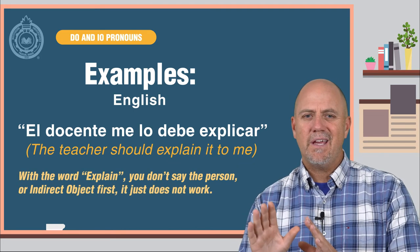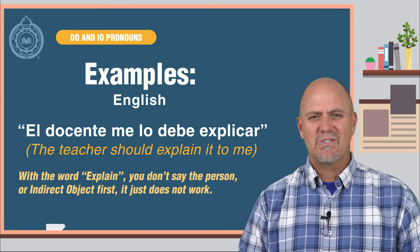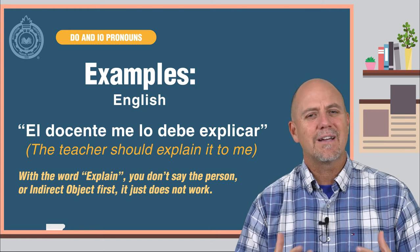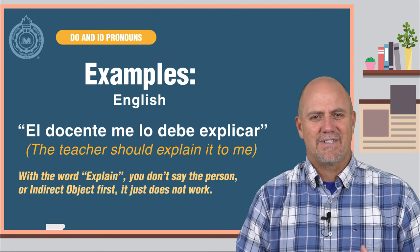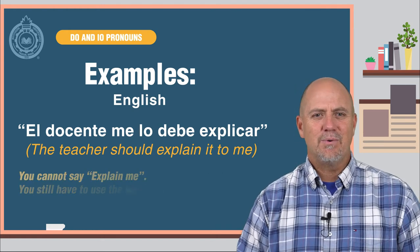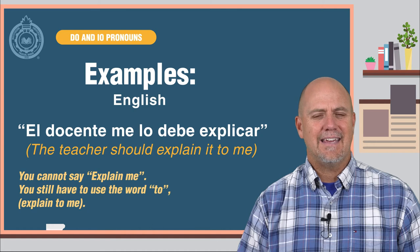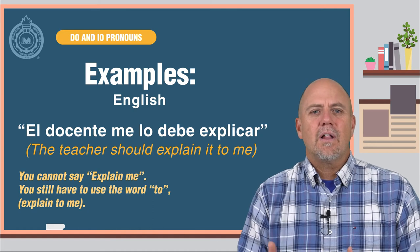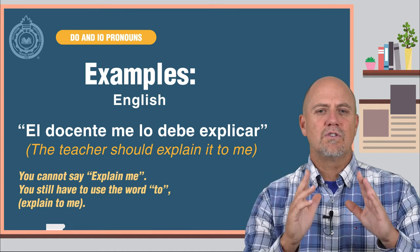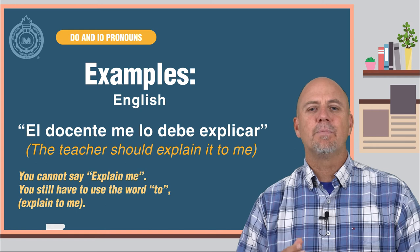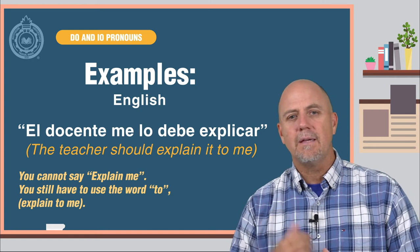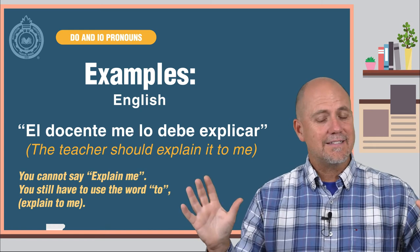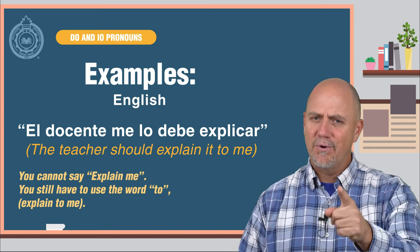With the word "explain," you don't say the person or indirect object first — it just doesn't work. You cannot say "explain me." You still have to use the word "to": "explain to me." English always has exceptions to every rule.